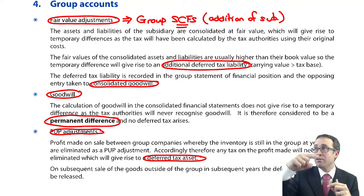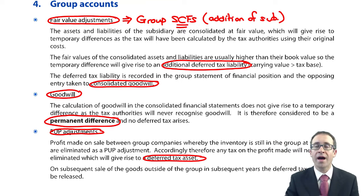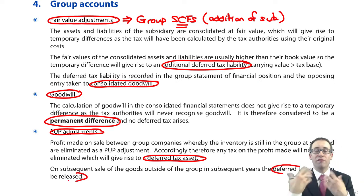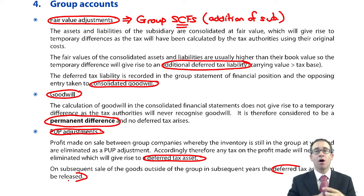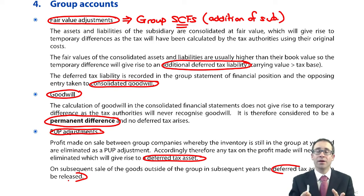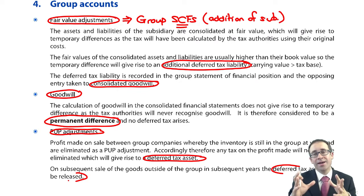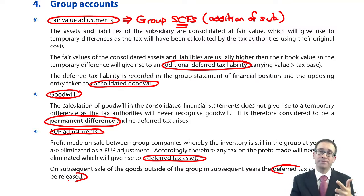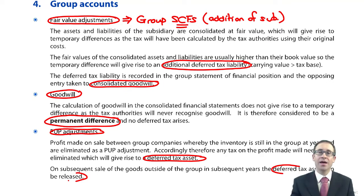When the subsidiary finally sells the goods outside into the real world, outside of the group, we then release that deferred tax asset — reverse it out. So you credit the asset and debit the expense, because we can now recognise the tax expense on the ultimate sale of the goods outside of the business. If you have a profit between the parent and the sub on consolidation, you eliminate the profit and eliminate the tax upon it as well. You'd be prompted to do so within the question.